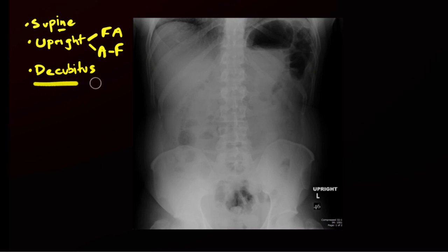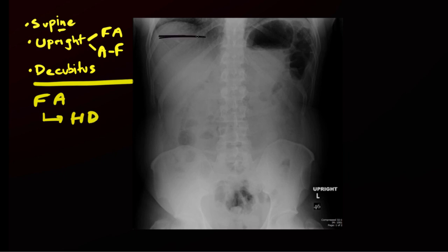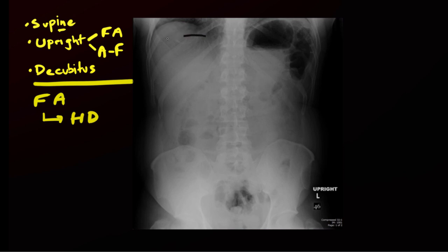Speaking of free air, one of the best places to look for it is on the upright radiograph beneath the hemidiaphragms. When present, you're essentially going to see areas of lucency beneath the hemidiaphragms, right or left — often easier to see on the right side because the stomach bubble on the left can preclude you from confidently identifying free air. Sometimes free air may not appear as a clean area of lucency, but rather as curvilinear bands trapped between the different muscular layers of the hemidiaphragm.